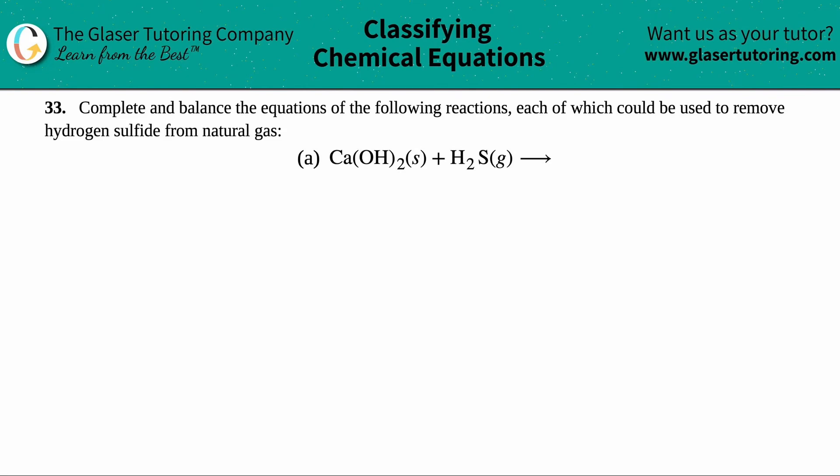Number 33, complete and balance the equations of the following reactions, each of which could be used to remove hydrogen sulfide from natural gas. And then we have letter A. So we have calcium hydroxide, Ca(OH)₂ solid plus H₂S, hydrogen sulfide. And we just need to make the products.